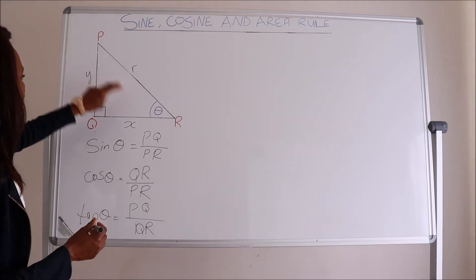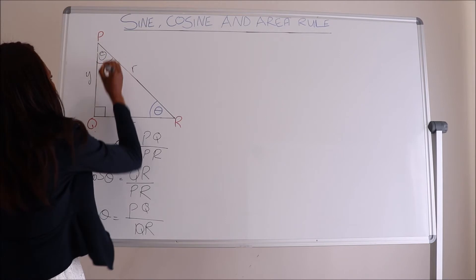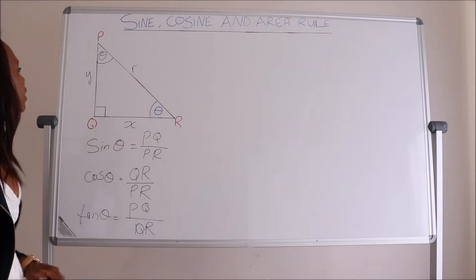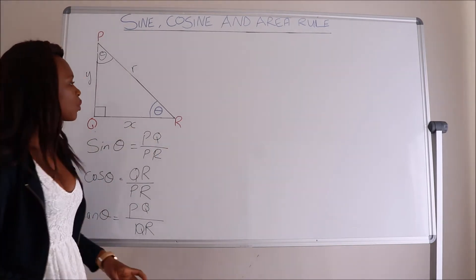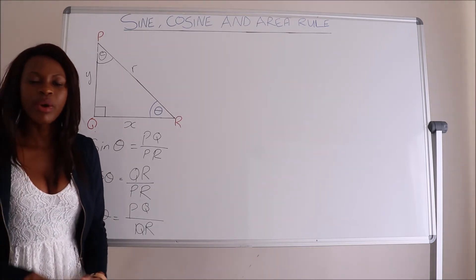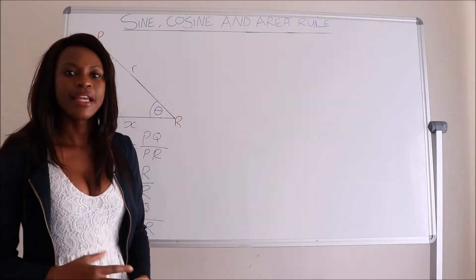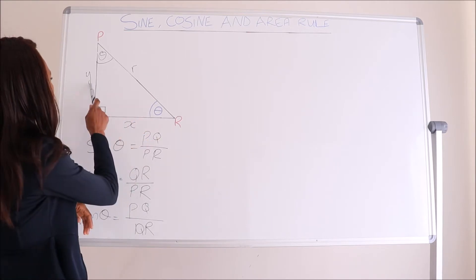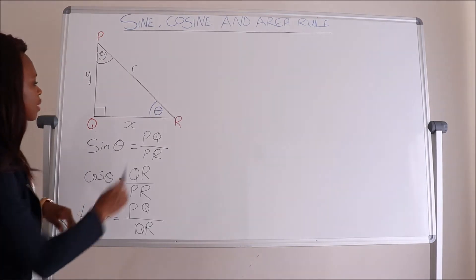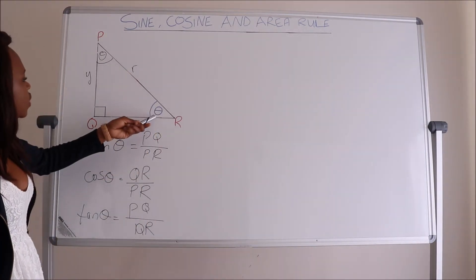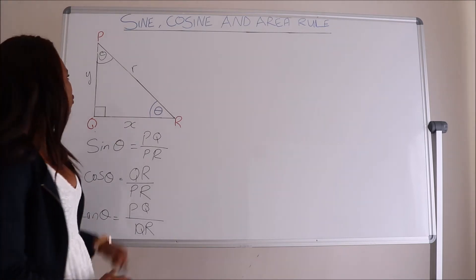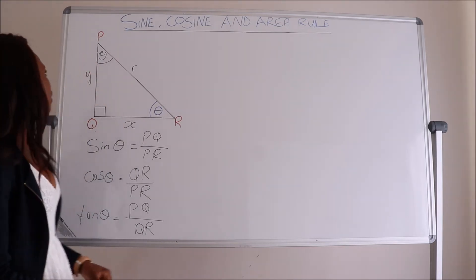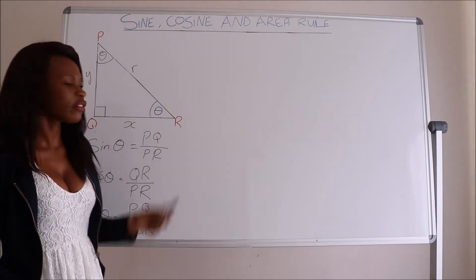What you have to understand is that if I place my theta on P instead, then it will change everything. Our theta's opposite becomes QR, its adjacent becomes PQ, and its hypotenuse remains PR. It depends on where your theta is — where it's looking, that's your opposite side. The longest side is your hypotenuse, and the remaining side is your adjacent. So it always depends on where your theta is positioned.